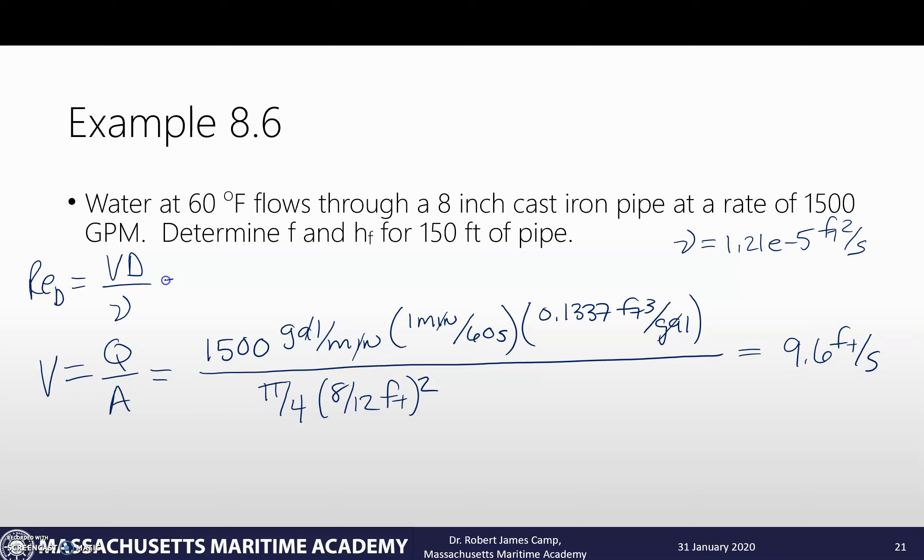Now we can go and plug that back into our Reynolds equation. 9.6 feet per second. Our diameter is 8 divided by 12 feet, divided by our 1.21 times 10 to the negative 5 feet squared per second. We plug all those numbers in, bash them together. We get 5.3 times 10 to the fifth. That's a very turbulent flow. So that means we're going to be using the Moody chart and not the shortcut of 64 over the Reynolds number.